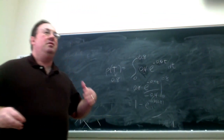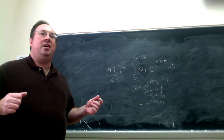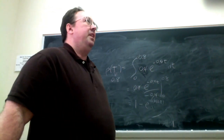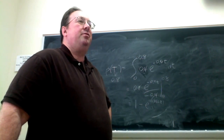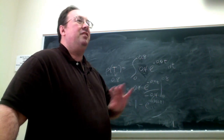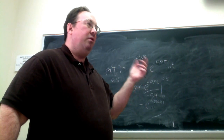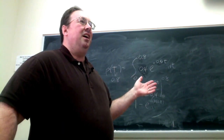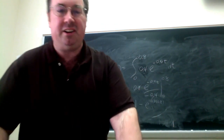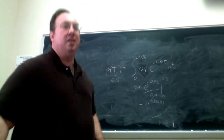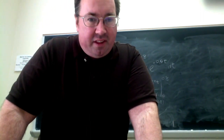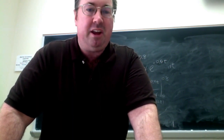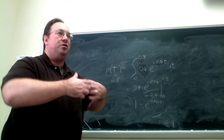Be careful with rounding — if the problem asks for four decimal places, carry at least double that in intermediate steps, especially with exponentials where you might get pretty small numbers. I had a case in my Math 102 online course where someone got the right answer but was just barely off due to rounding, and I had to override it manually.